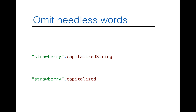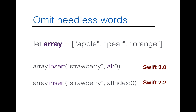Similarly, `capitalizedString` becomes just `capitalized`, because `capitalized` can only be called on string objects — it's obvious. Needless words like `string` are stripped going forward. Returning to the array example: if you want to insert a new string object like `strawberry`, you now use `insert`. With Swift 2.2 you'd say `insert(atIndex:)`, but `atIndex` has been shortened to just `at` in Swift 3.0 — fewer words.